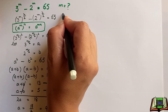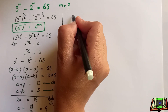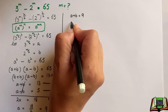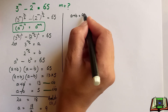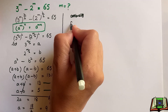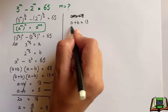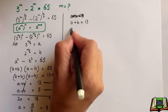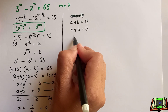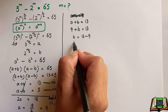Now we substitute a equals 9 into equation 1: a plus b equals 13. So 9 plus b equals 13, which gives b equals 13 minus 9, so b equals 4.